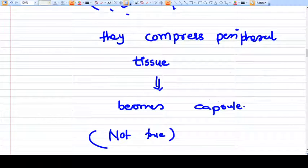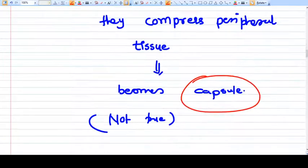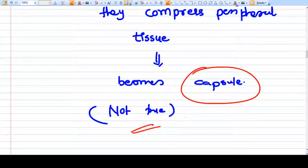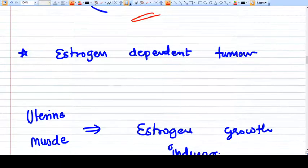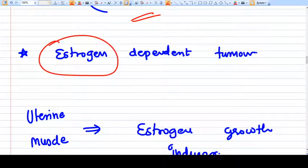This compressed tissue makes their capsule. It's not a true capsule, it's a false capsule. If we think that the growth factor for uterus is estrogen and progesterone, these hormones signal growth in the uterus.